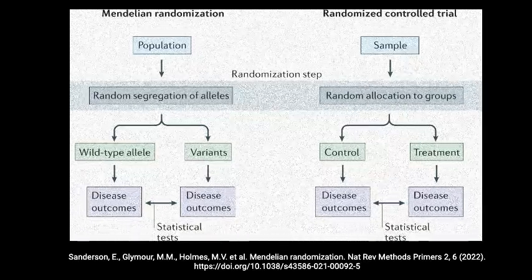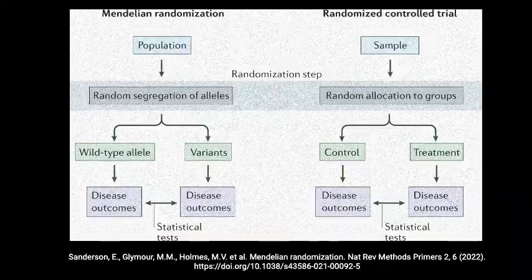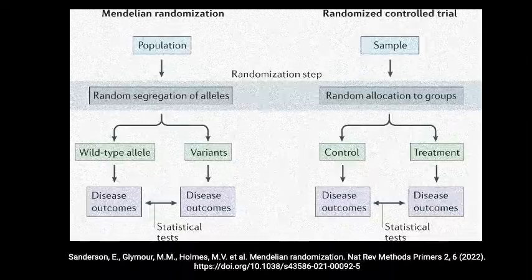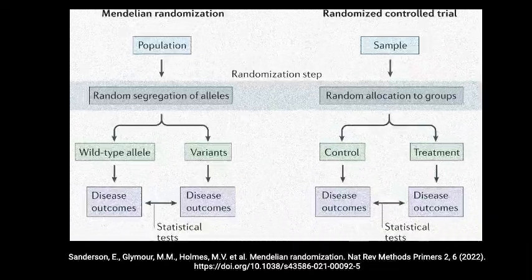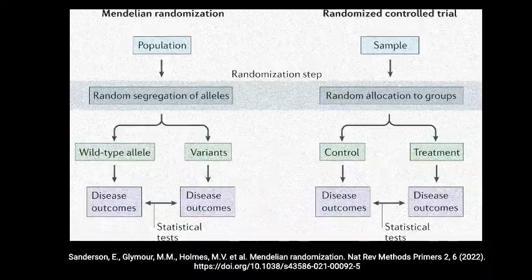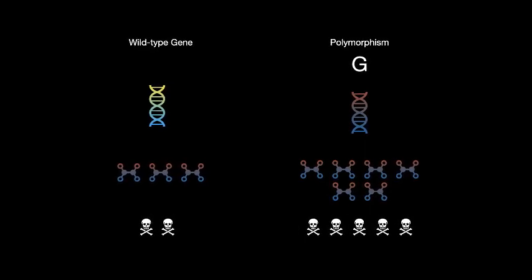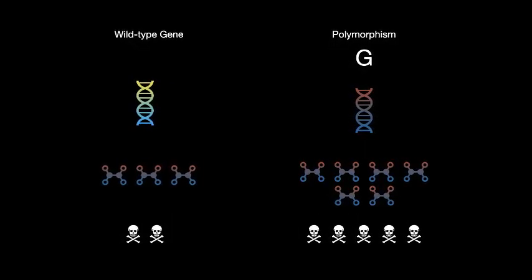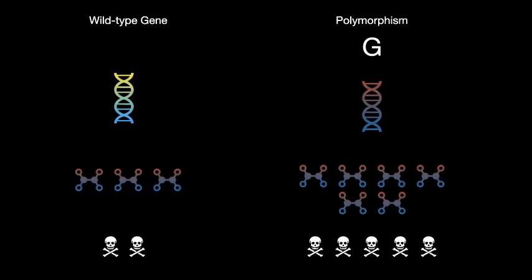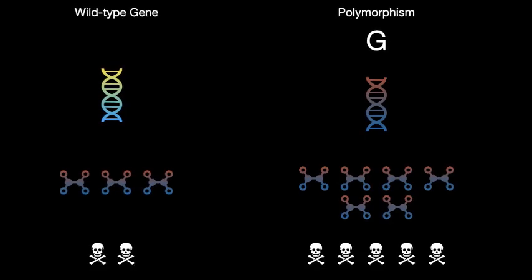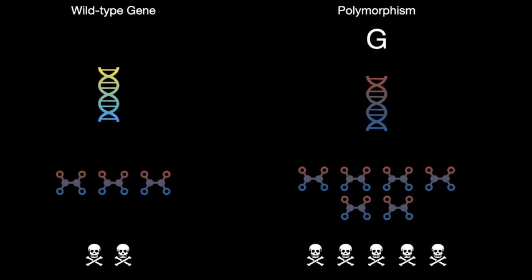How do we use this genetic randomness to identify disease causations? If we know that a specific genetic polymorphism G helps our bodies to form more of substance X, and we study a large population and find that those people with more of polymorphism G — compared to the normal gene — get more of disease Y, then that's another clue that substance X is causal for disease Y. Mendelian randomization is essentially a randomized trial not conducted by humans, but conducted by the creation process before birth, before we get the disease, and is unaffected by confounding factors.